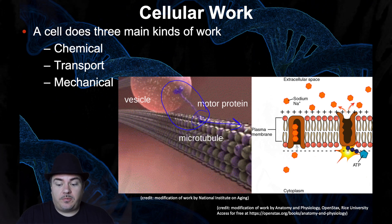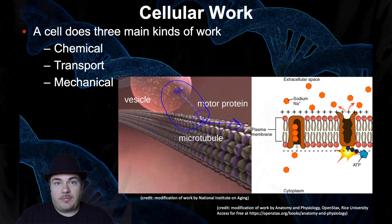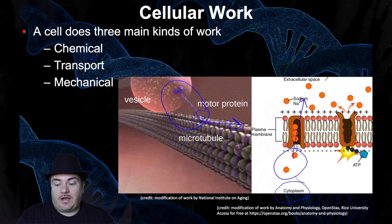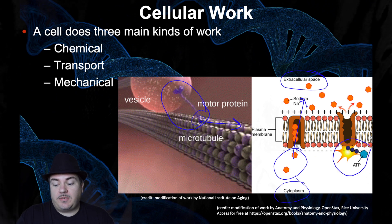Or active transport — when you pump things against their electrochemical gradient, like taking sodium ions from a low concentration in the cytoplasm and pumping them to a high concentration outside the cell, that requires energy. Where does the energy come from? ATP.